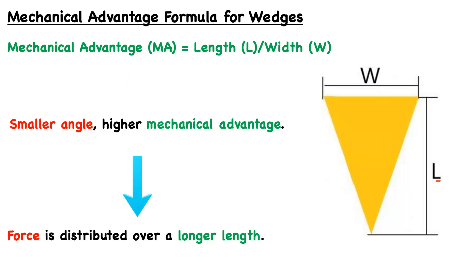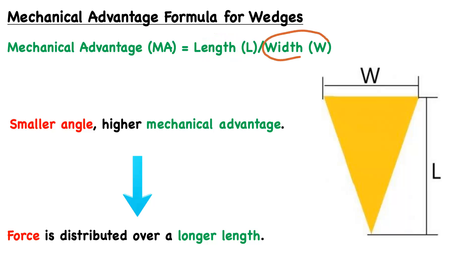The length is considered the distance from the blunt face to the penetrating edge, and the width is essentially the size of the blunt face. If we were to increase the length or decrease the width, we will be increasing the mechanical advantage.